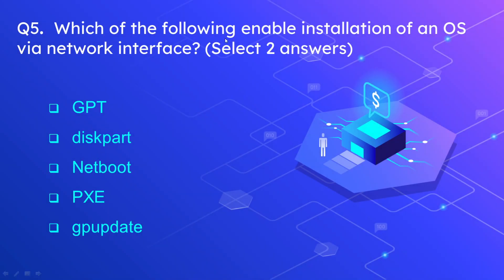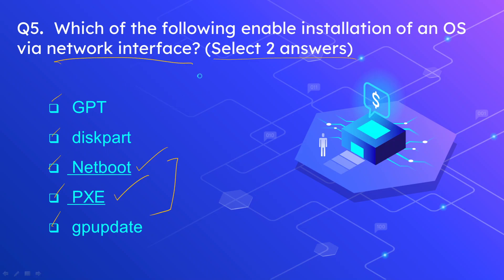Question number 5: Which of the following enable installation of an OS via network interface? Select two answers. The options are GPT, Diskpart, Netboot, PXE, and GP update. The correct options are Netboot and PXE. These two options allow you to upgrade or install an operating system using a network interface.